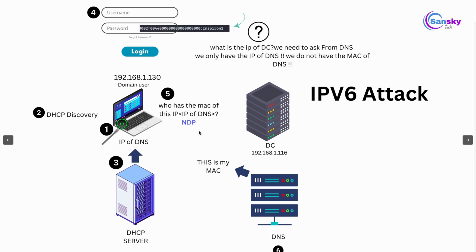But there is a problem: the system does not know the IP address of the DC, so it must ask the DNS server for it. However, there is another problem — in order to communicate with the DNS server, it must first know the MAC address of the DNS server, so it needs to retrieve that.